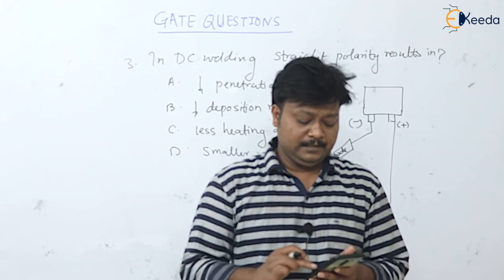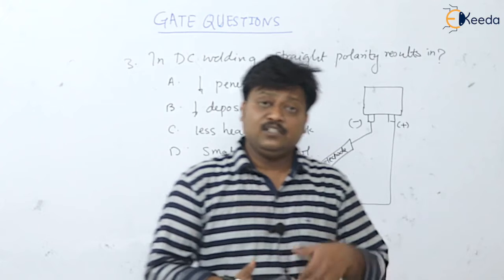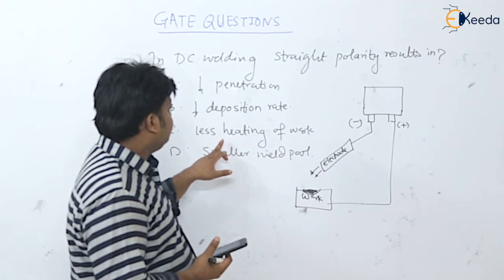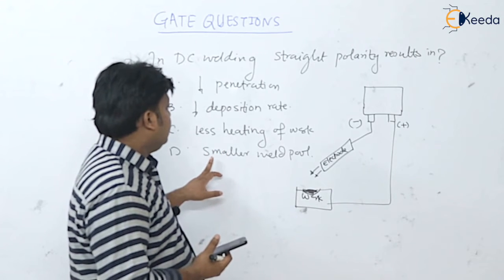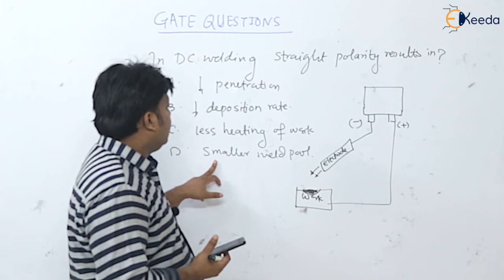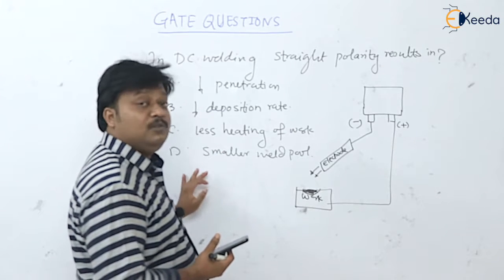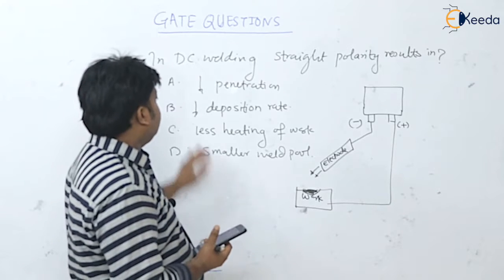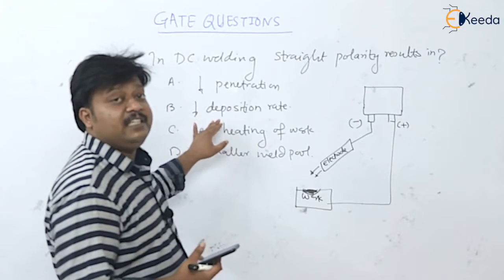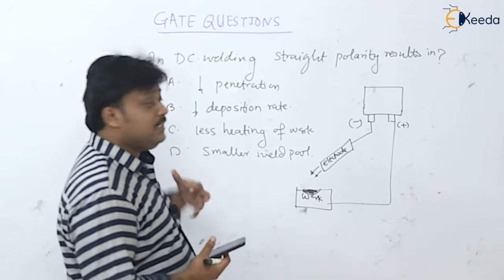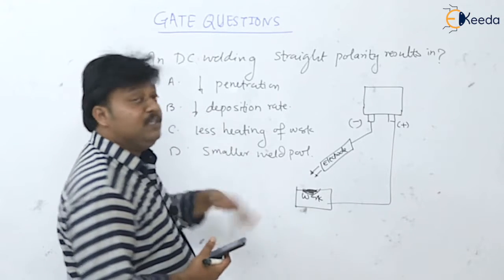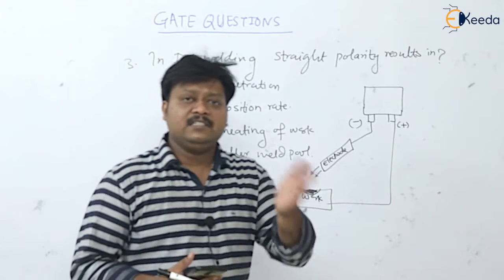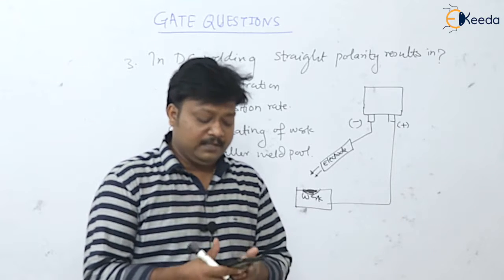In reverse polarity, we get less penetration, less heating of the work, a smaller weld pool, and the deposition rate is very high as the electrode consumes and we get maximum deposition from it. This is the main difference between straight polarity and reverse polarity.